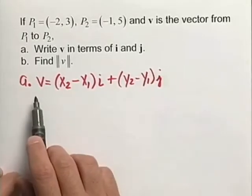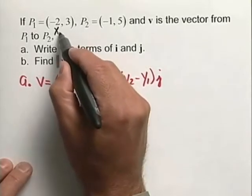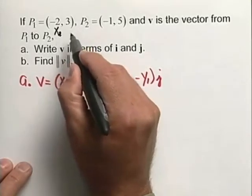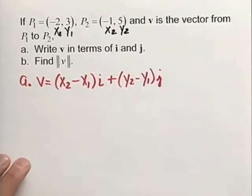For part A here, I have our V formula written out. A good idea may be to label these x1, y1, and x2, y2, and plug in our formula.